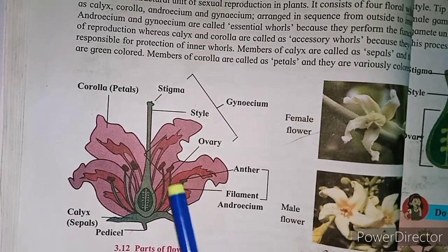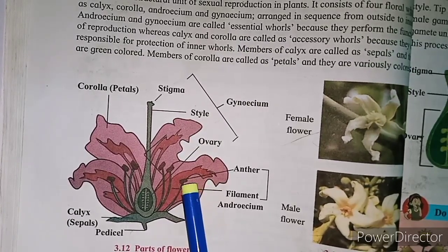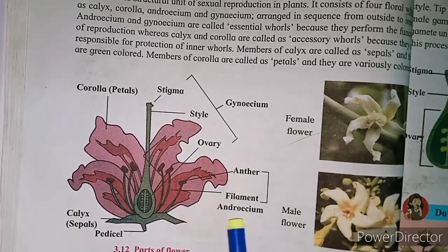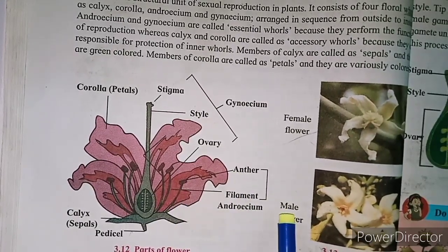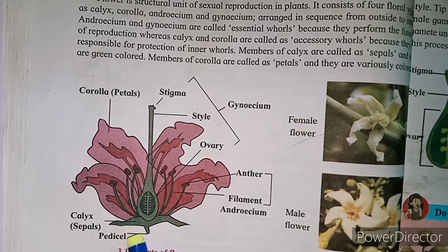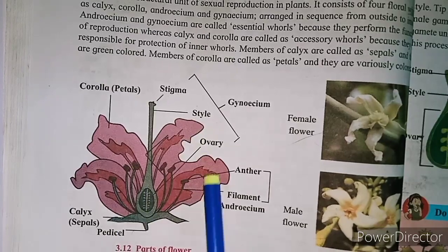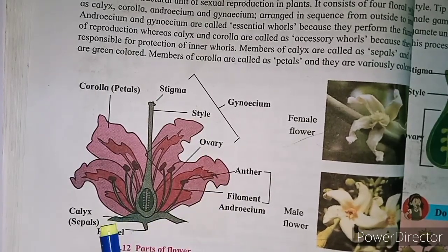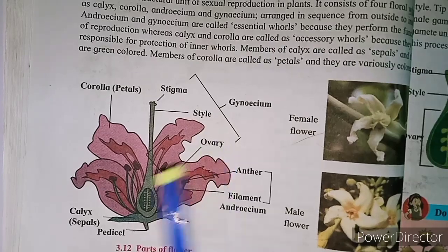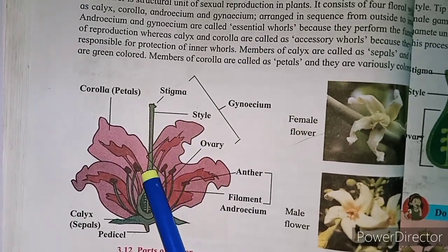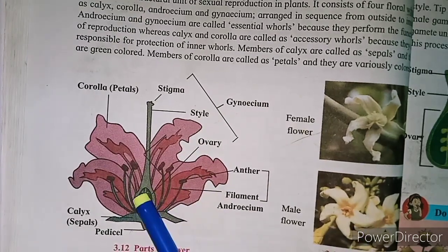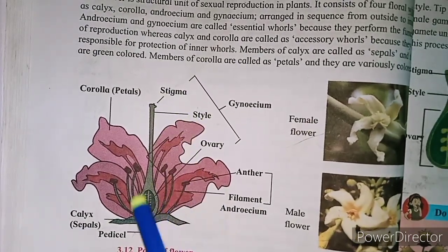In the diagram: the anther is the bell-shaped part where pollen grains are produced. The filament is the stalk — anther and filament together form the androecium. The green part is calyx (sepals), and the colored petals form the corolla. The female part — gynaecium — consists of stigma, style, and ovary.